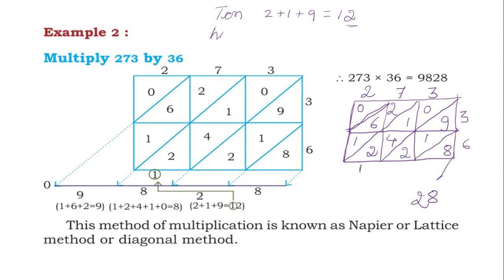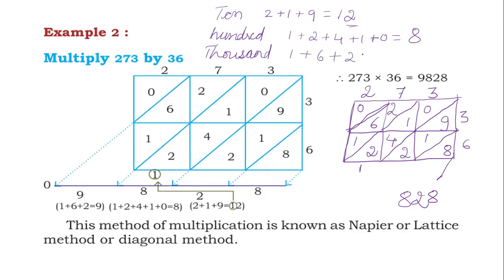For the hundreds digit, add 1 plus 2 plus 4 plus 1 plus 0, which equals 8 — put 8 in the hundreds place. For the thousands digit, add 1 plus 6 plus 2, which equals 9 — put 9 in the thousands place. In the ten-thousands digit there is 0, so the final answer is 9828.